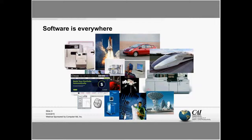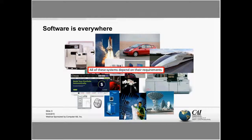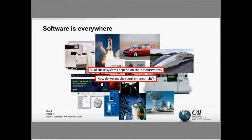Software is everywhere — in all these devices and machines. All these systems depend on requirements. Of course, the more safety-critical something is, the more it depends on the requirements. I ask myself all the time: how do we get requirements right? I feel that other people struggle with the same question. We don't really know how to deal with requirements, especially when they are so important for success.